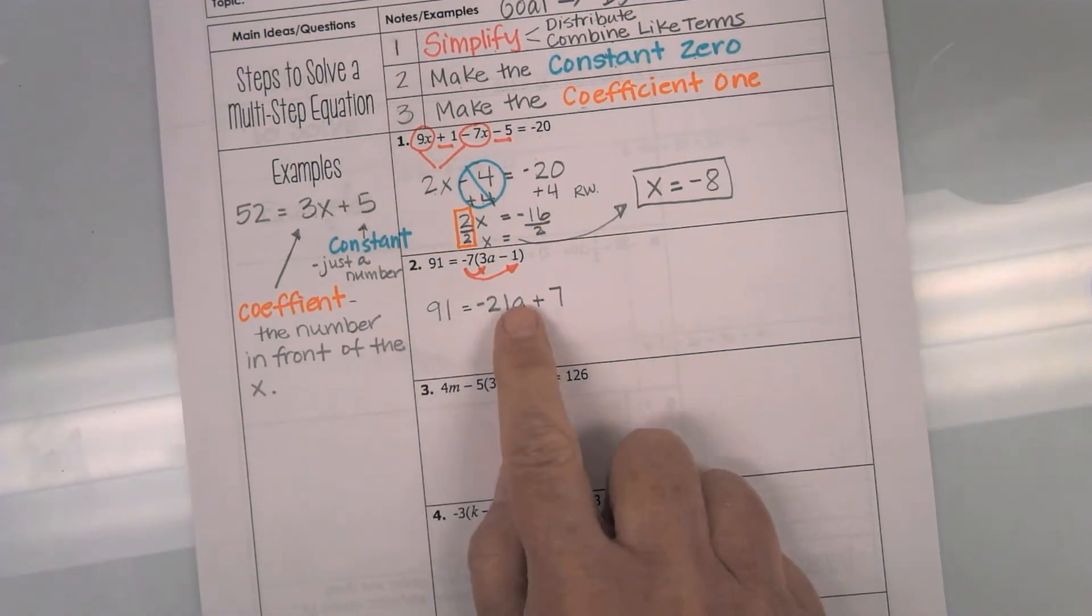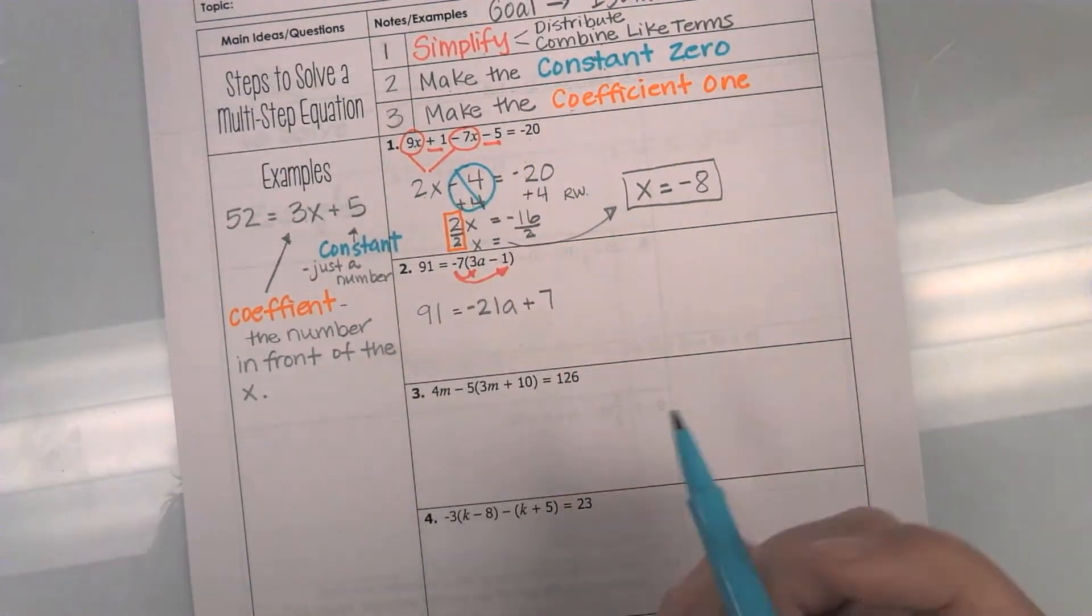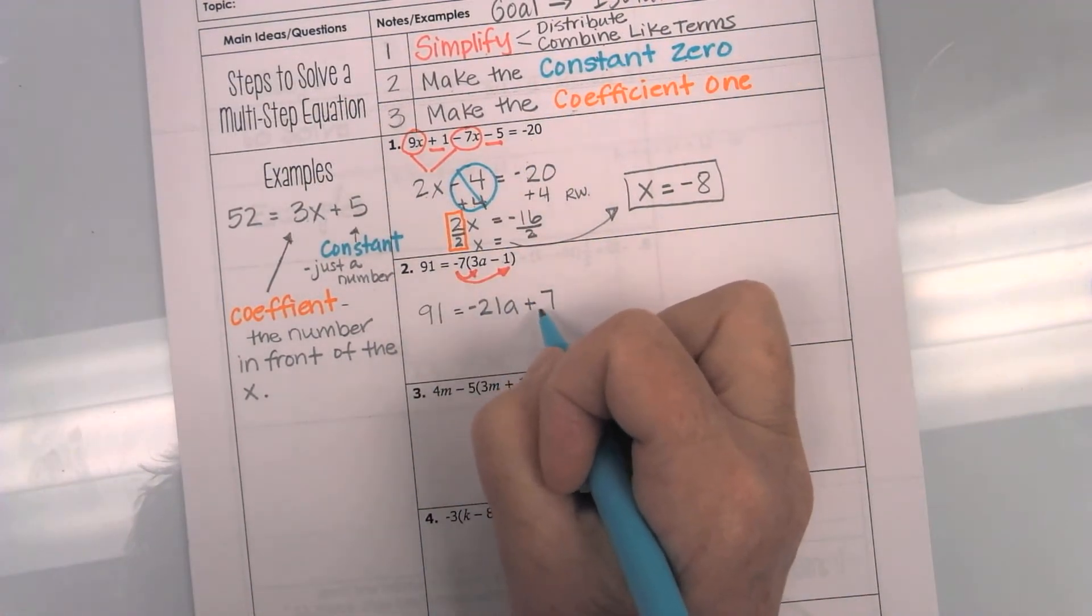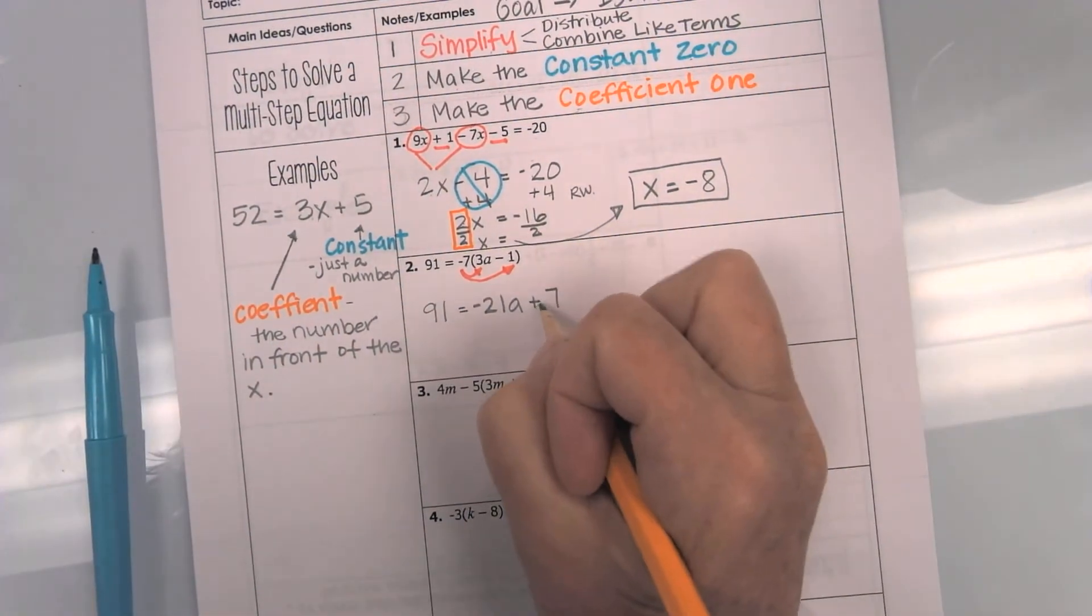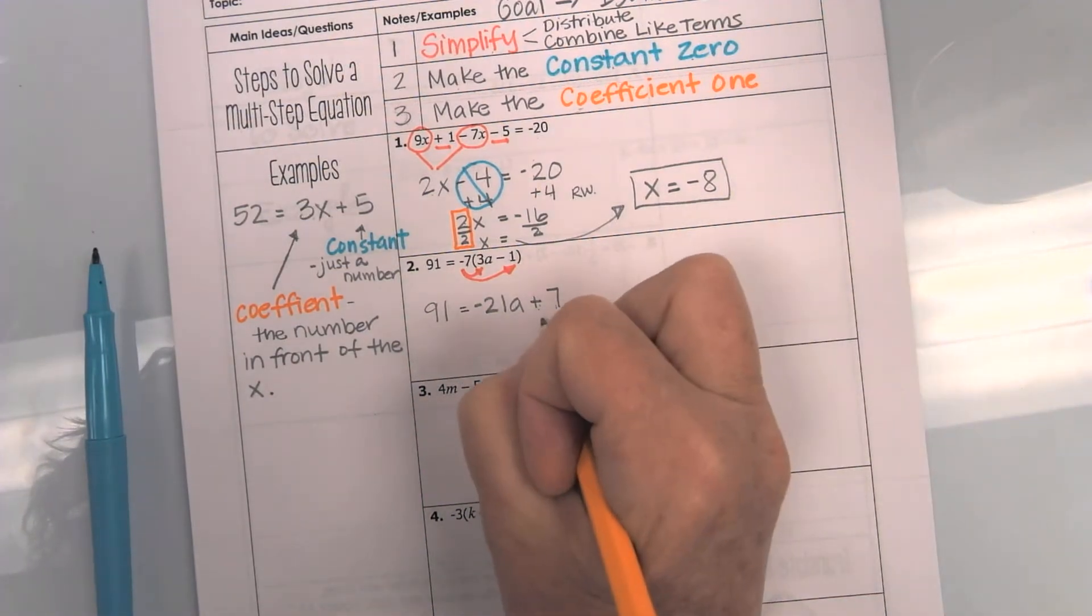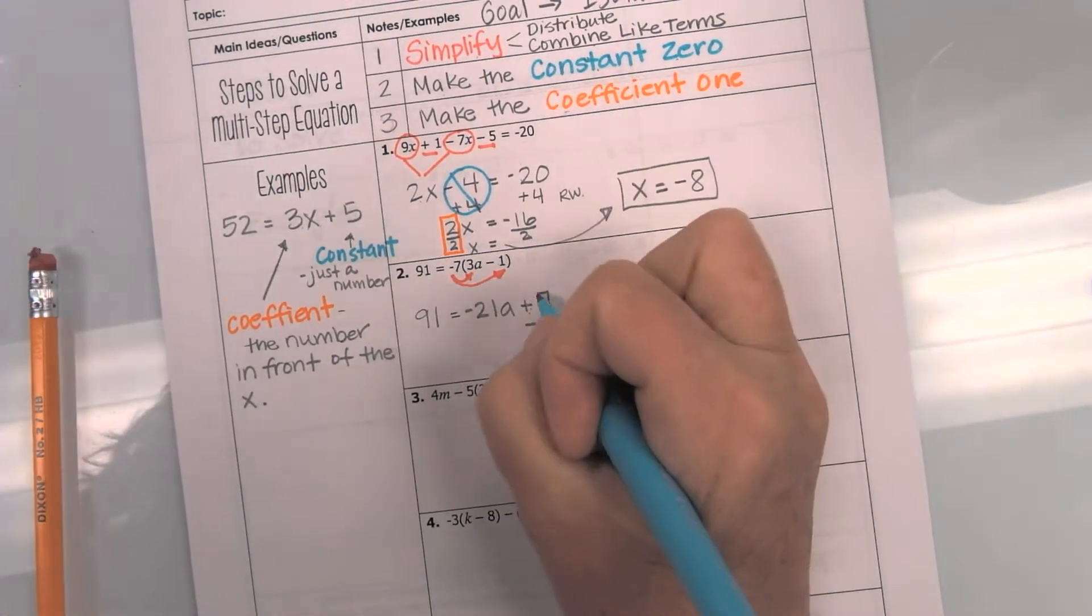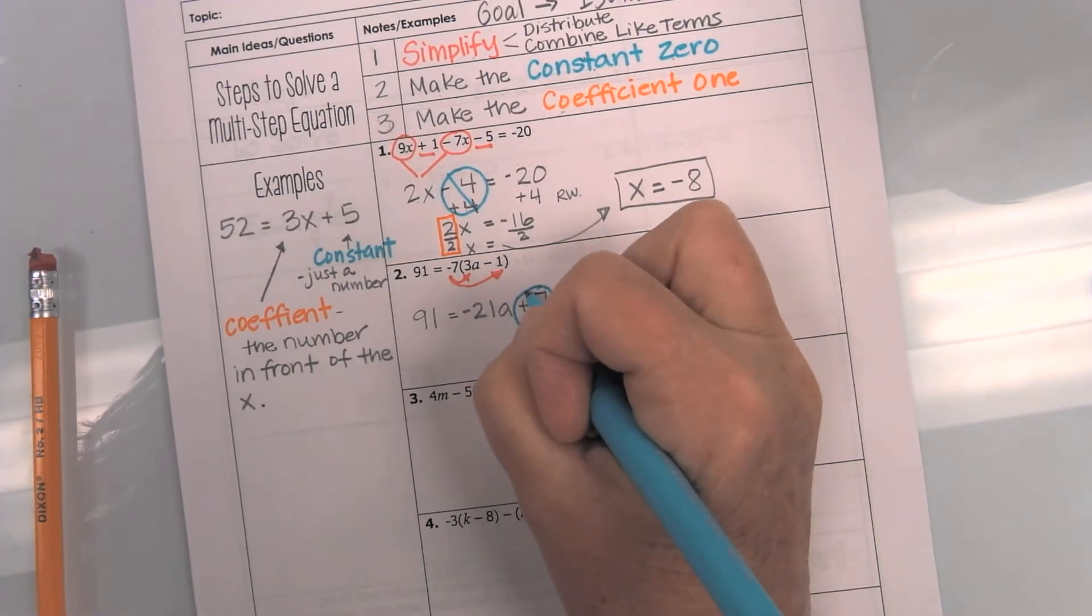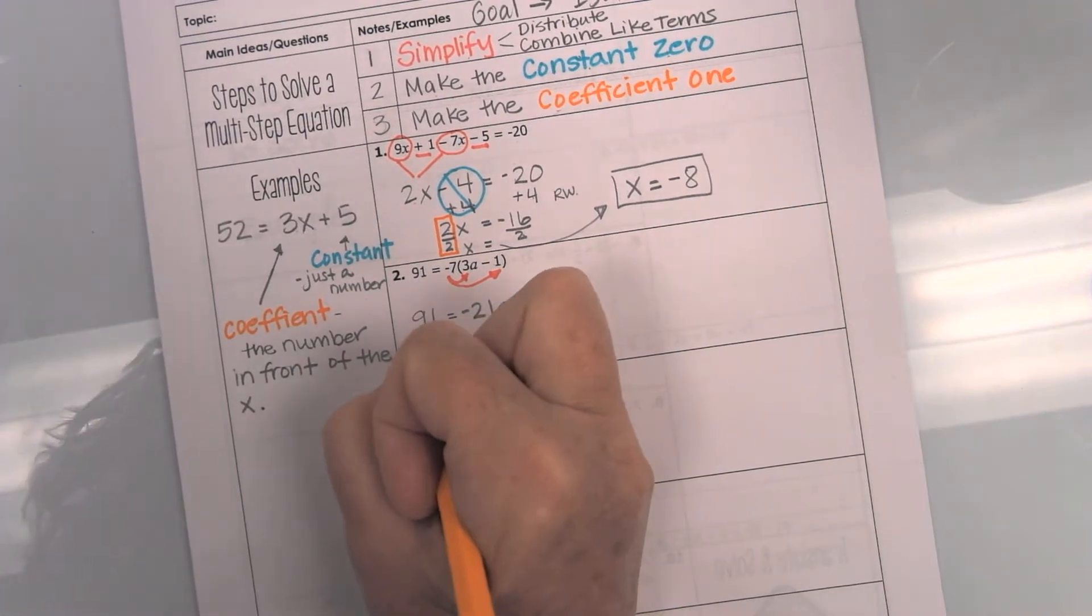it is time to make my constant 0. Now, this one looks different than the first one. But here, my 0 is still this number at the end. I need that to be 0. How do I make a positive 7 into a 0? I use the opposite. So, positive 7 and negative 7 became a 0. There we go. And whatever I do to one side, I have to do to the other.